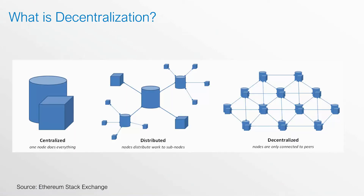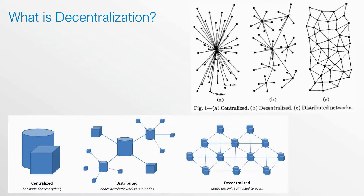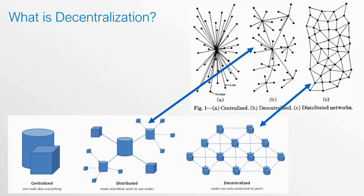If you research further, you may also come across another graphic, taken from one of the leading answers on the Ethereum stack exchange. This graphic shows a complete opposite of what the first graphic shows. The decentralized in the first graphic matches distributed on the second graphic, and distributed in the first graphic actually matches decentralized on the second graphic. So let's see exactly why that is by looking at the types of decentralization as they apply to blockchain.